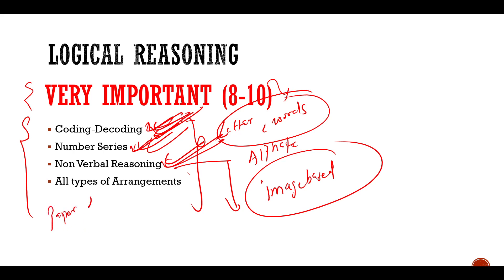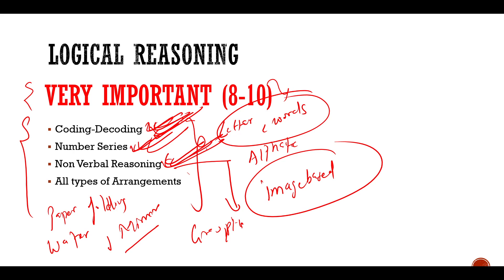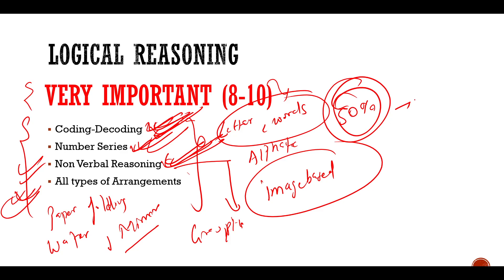In non-verbal reasoning, you will get questions from paper folding, water image, mirror image, and groupings — image-related non-verbal reasoning questions. The weightage is very high: out of 20 questions, you can expect four to five from non-verbal reasoning. The fourth key topic is all types of arrangements — linear arrangement, circular arrangement, sitting arrangements, floors arrangement, and ladders arrangement. These four topics together cover almost 50% of the logical reasoning weightage.